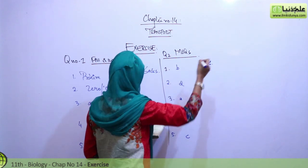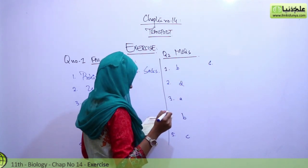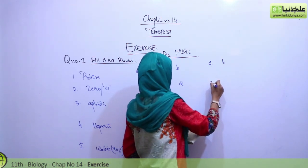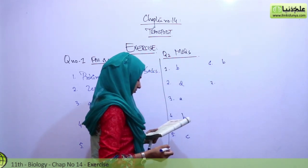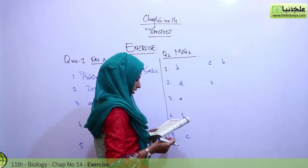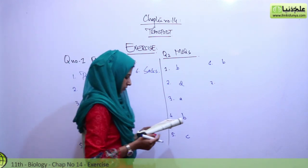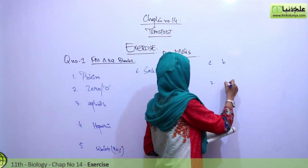And sixth is, which of the following is true about mammals? This is option B, that they have left aortic arch. Seventh, the process that most likely directly enables the root cells to absorb minerals by active transport and enables the muscle cells to contract is option A, respiration.